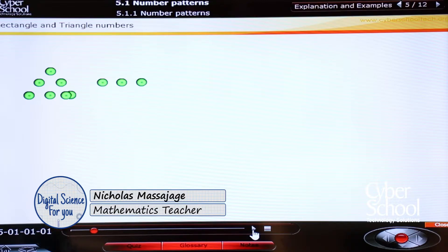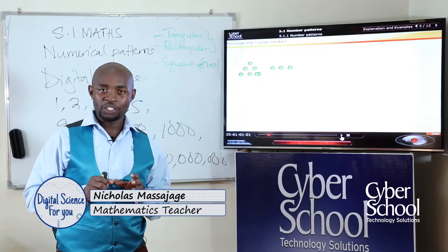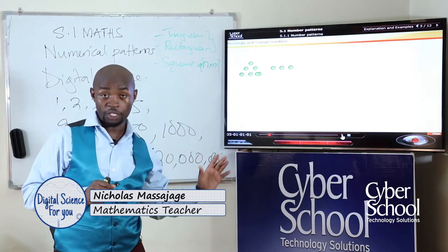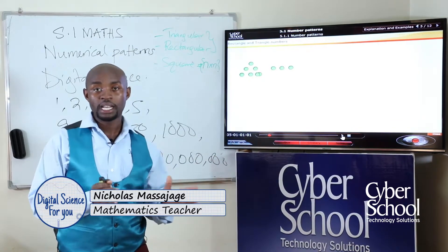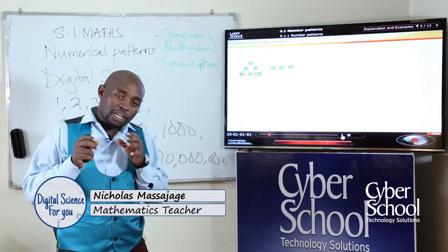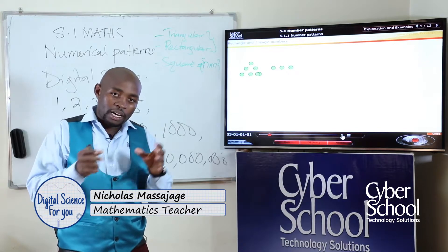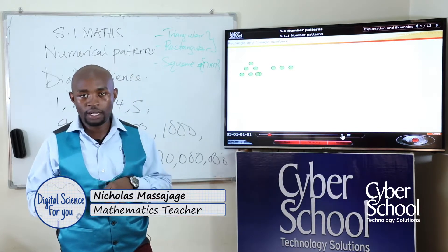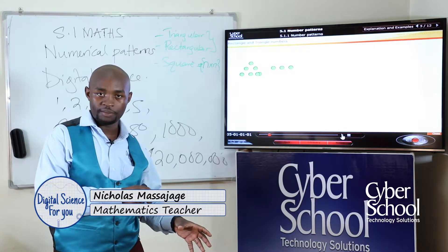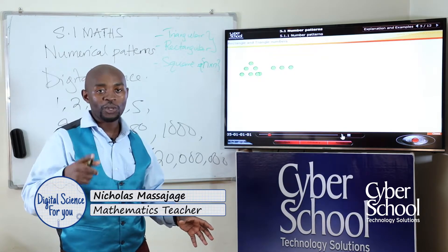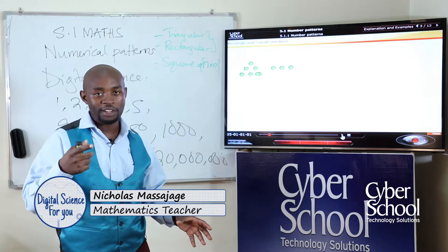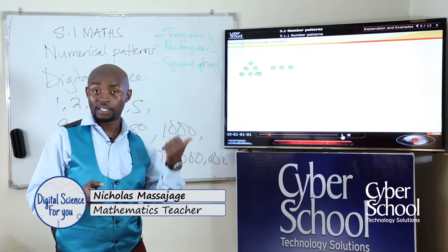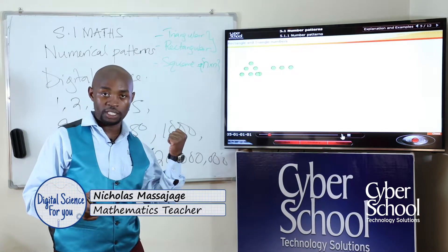The beauty about digital science is that you're going to see the formations of these numbers — you see them from the screen right here. We're going to see how the numbers come to form: how does a rectangular number come to form from a triangular number, and how does a triangular number come to form from a rectangular number? Then later on, we shall see how we can divide up polygons and shapes using the number patterns that you have seen.